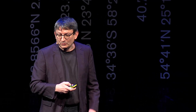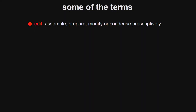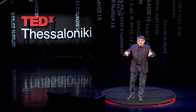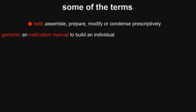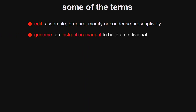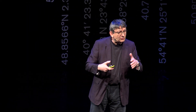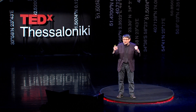By 'edit', we simply mean the standard dictionary definition: we're going to make a precise, controlled change. It can be a very large change or a very small change. What we're changing is the genome, and the genome is really like an instruction manual that tells us what we are in genetic terms. Every one — or most — of the trillions of cells in our bodies contains two instruction manuals: one inherited from our mother and the other from our father.